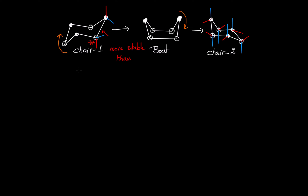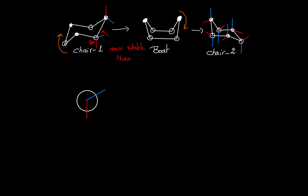I will start drawing the Newman projection by drawing the back carbon first, and then I will draw the bonds. I'm looking at this carbon here — this is my front carbon. The red bond, which is the axial, is facing down, so I will draw it like this. The equatorial is facing to this side, and the bond with the CH₂, which is part of the cycle, is pointing to the left side.